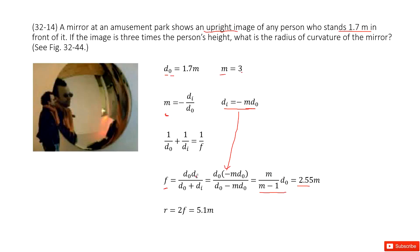After we get the focal length, we can get the radius. The radius is 2 times f. So we input f and get the answer there. Thank you.